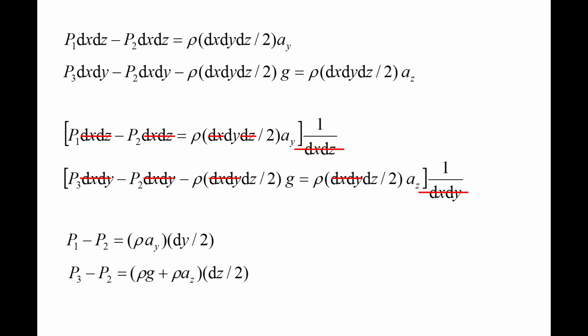The two equations of motion simplify to p1 minus p2 equals rho ay times one-half dy, and p3 minus p2 equals the quantity rho g plus rho az times one-half dz.